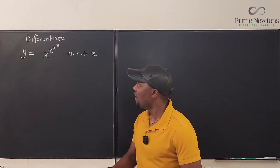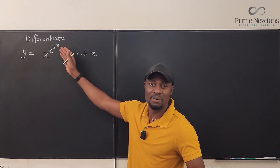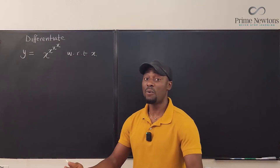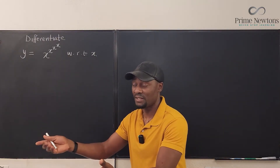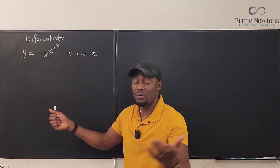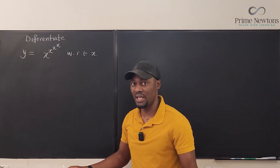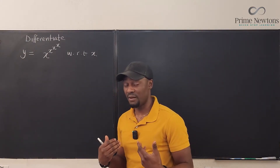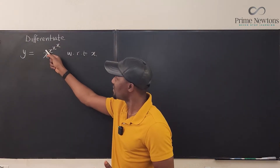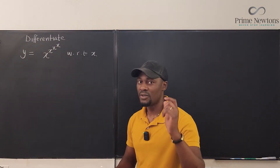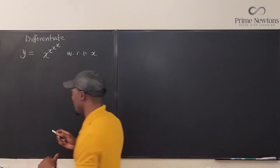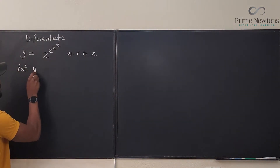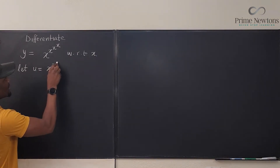We have a chain of x's stacked up as exponents, and we cannot apply the power rule because the power rule only works when you have numbers as the exponent. Since we have x there, I have to find a way to differentiate this. To make life easy, I'm going to replace a portion of these with a letter — I'll say let u equal x to the x to the x.